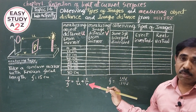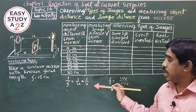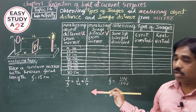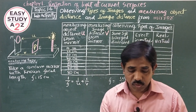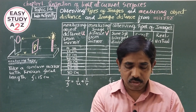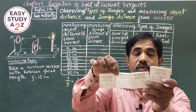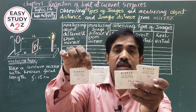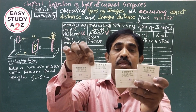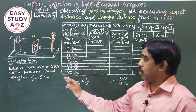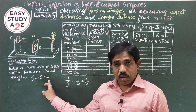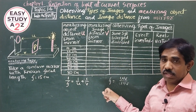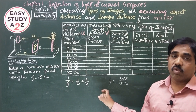This lab activity uses the distance method — by changing the object distance, we measure the focal length of the concave mirror. In the market, concave mirrors are available with the focal length already found and marked on the cover. We take a mirror of known focal length, perform the experiment, and verify whether our readings give the correct focal length.